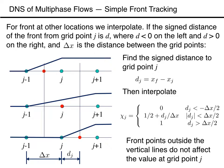If the front is neither halfway between two grid points nor exactly at a grid point, the simplest approach is to linearly interpolate between the two cases. Thus, if dj is the distance between the front point and grid point j and delta x is the grid spacing, then the value of the marker at grid point j is 0 if dj is less than negative half the grid spacing. If dj is between -delta_x/2 and +delta_x/2, then the value is half plus dj over delta x, and if dj is greater than delta_x/2, then the marker function is equal to 1.